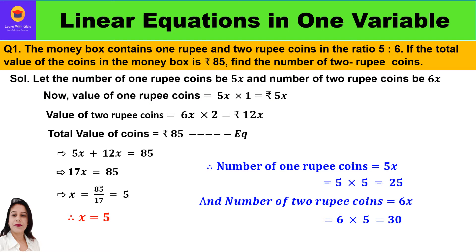The first question is: the money box contains 1 rupee and 2 rupee coins in the ratio of 5 is to 6. If the total value of the coins in the money box is 85 rupees, find the number of 2 rupee coins. Now before taking up the solution, let me explain the concept of money.